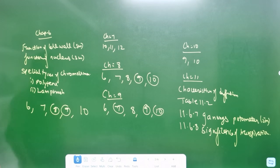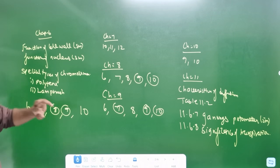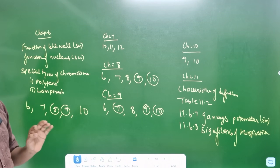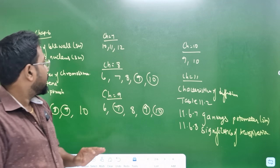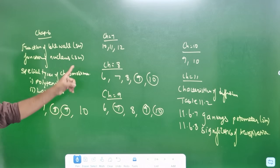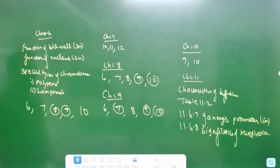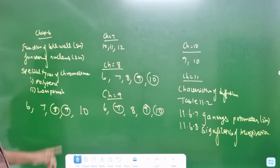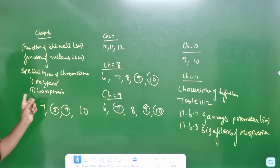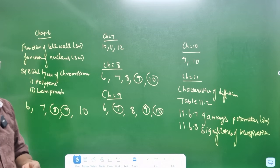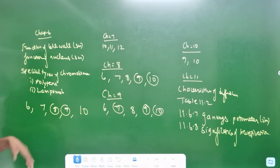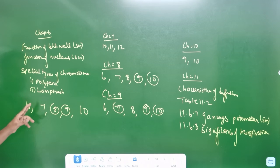Chapter 6 is function of cell wall — 3 marks. Function of nucleus — 3 marks. Nucleus, cell wall — 3 marks. Special type chromosome — there is a chromosome. Polyteam and lambrages. If you look at the same thing, I will see the structure. Sections 6, 7, 8, 9, 10 — sections 8, 9 are 5 marks.